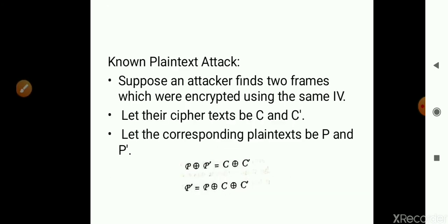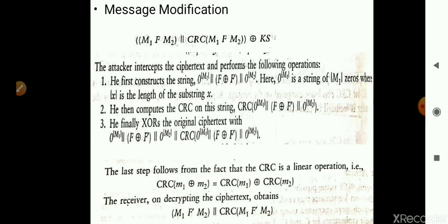Next, we can see how the plaintext is easy to attack. Since the key stream is reused and the Initialization Vector is only 24 bits in length, if an attacker comes to know that two frames are encrypted using the same Initialization Vector, it is easy for them to predict the key stream and potentially recover the plaintext.